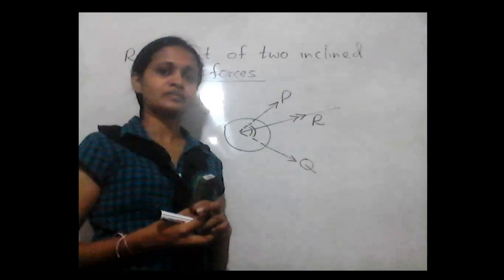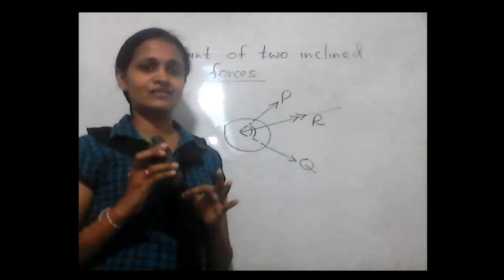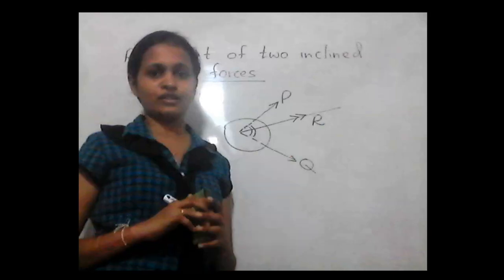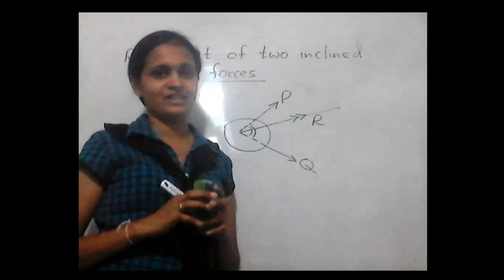That covers all the components in unit 9. We discussed what is meant by resultant force, the resultant of collinear forces acting in the same direction and in opposite directions, the resultant of two parallel forces, and finally that the resultant of two inclined forces lies in between the two lines of action of force. That's the end of unit 9. We will meet soon with chemical bonds.